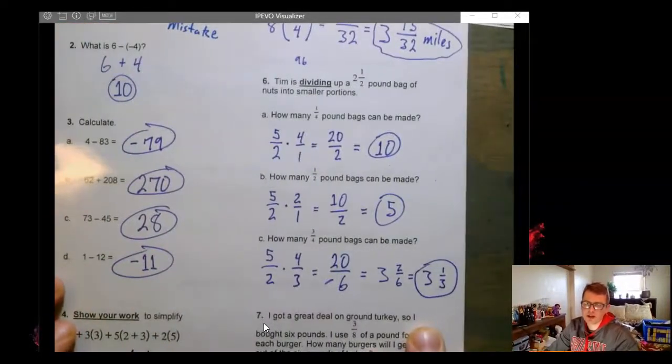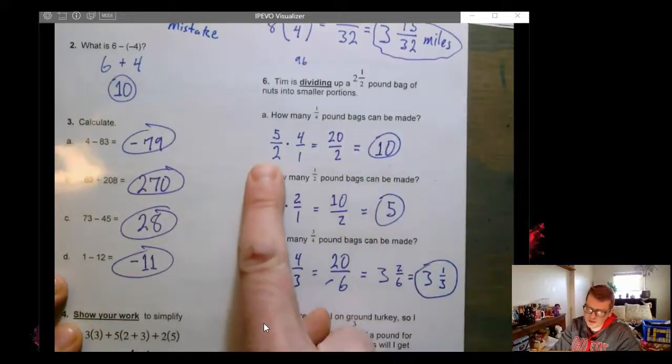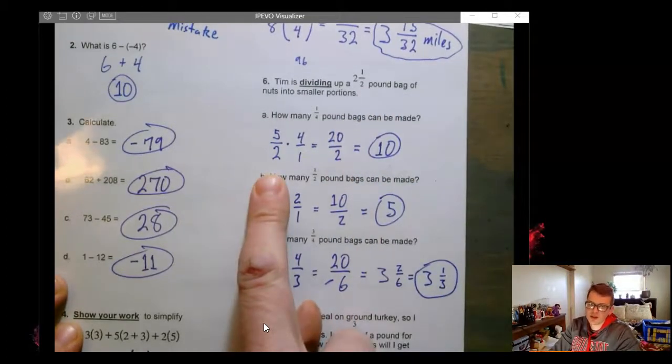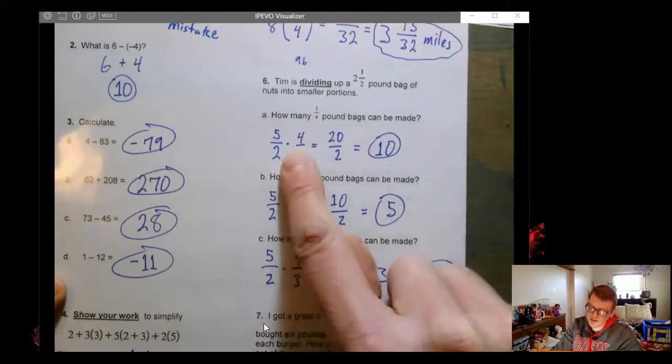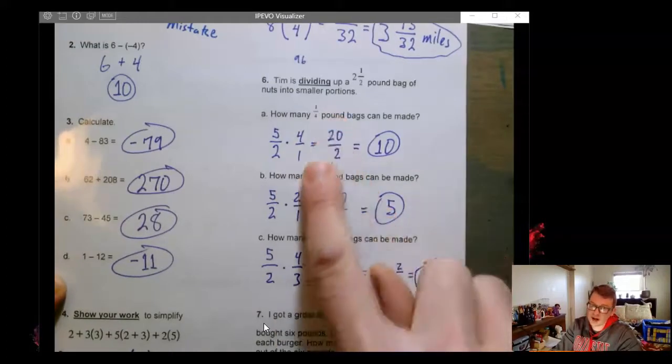Two and a half pounds is really five halves. And we divide that by these values, which we then keep, change, flip, right? So division by the fraction is going to end up being multiplication of that fraction's reciprocal.